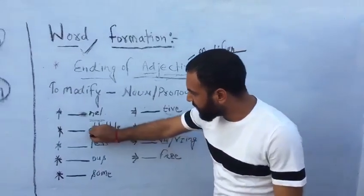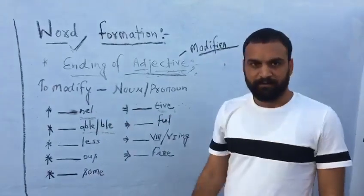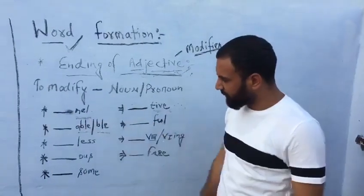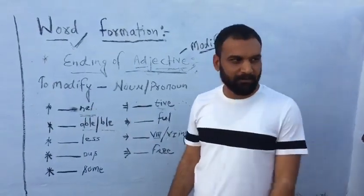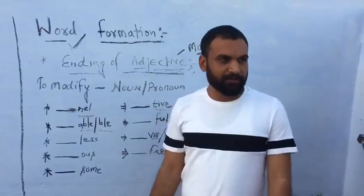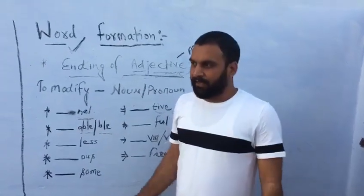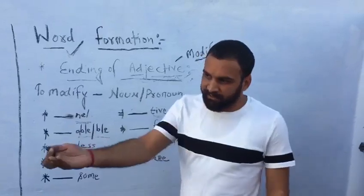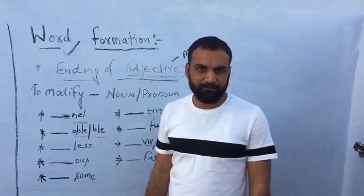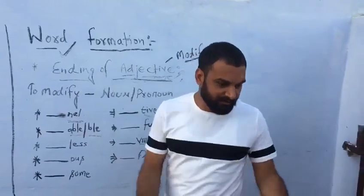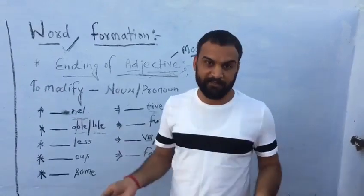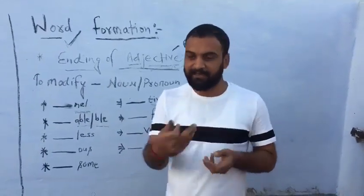Next word is A-B-L-E or I-B-L-E. There are many words with the same ending, like possible, like comfortable, like suitable. The chair is very comfortable, you can say. I can't stay here, the place is very uncomfortable. You can make such examples.